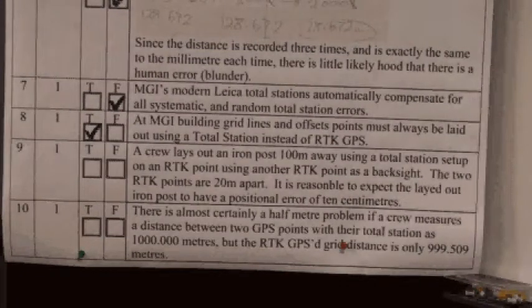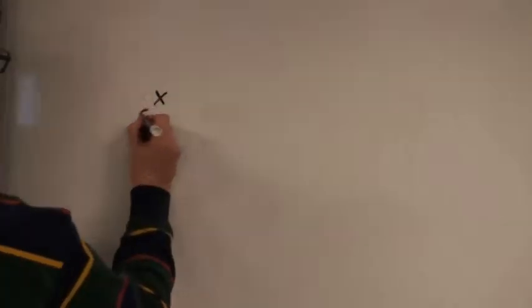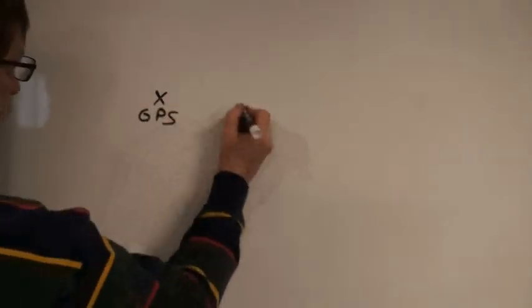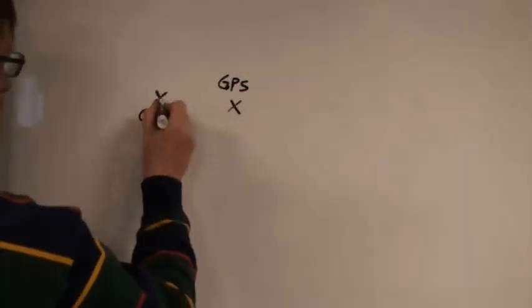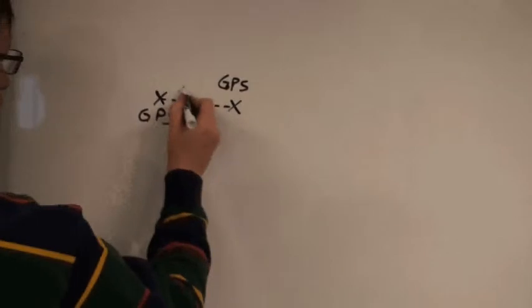So let's try to illustrate that question graphically. Here's an illustration. We're going to draw the two GPS points that are 20 meters apart, and then we're going to illustrate laying out an iron post.